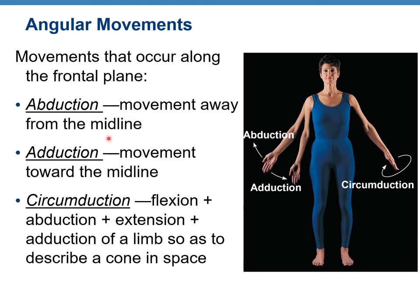Abduction is movement away from the midline. The word abduction means taking away — if somebody is abducted, that person is taken away. So you take your arm away from the midline. Adduction means adding it back, moving towards the midline. Circumduction is when you use your arm to draw a large circle in the air, and it includes flexion, abduction, extension, and adduction simultaneously.